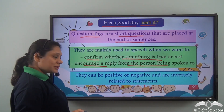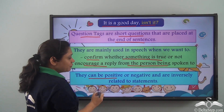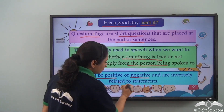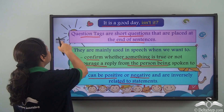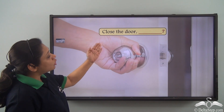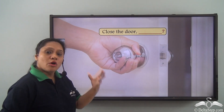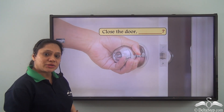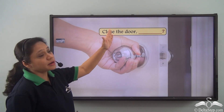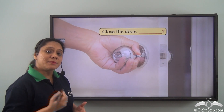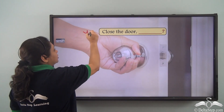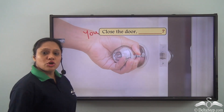Question tags can be positive or negative and are inversely related to statements. Now if we have a statement like 'Close the door,' what will be the appropriate question tag? Let us look at the statement first. 'Close the door' is an imperative statement, so we know that the subject is 'you.'